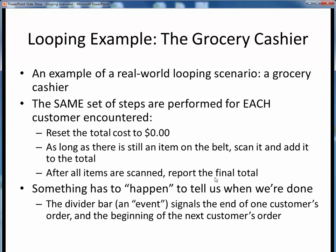But how does the cashier know when they're done scanning items? After all, we generally don't want to be paying for the next person's pizza or red wine. Something — some event — has to happen to tell the cashier to stop scanning items. In this case, the event is that plastic divider bar — the one with the realtor or mortgage broker ads on it — which tells the cashier that this is the end of the current customer's order. The cashier continues scanning items until that divider bar is encountered. This, in a nutshell, is what event-controlled looping is like.